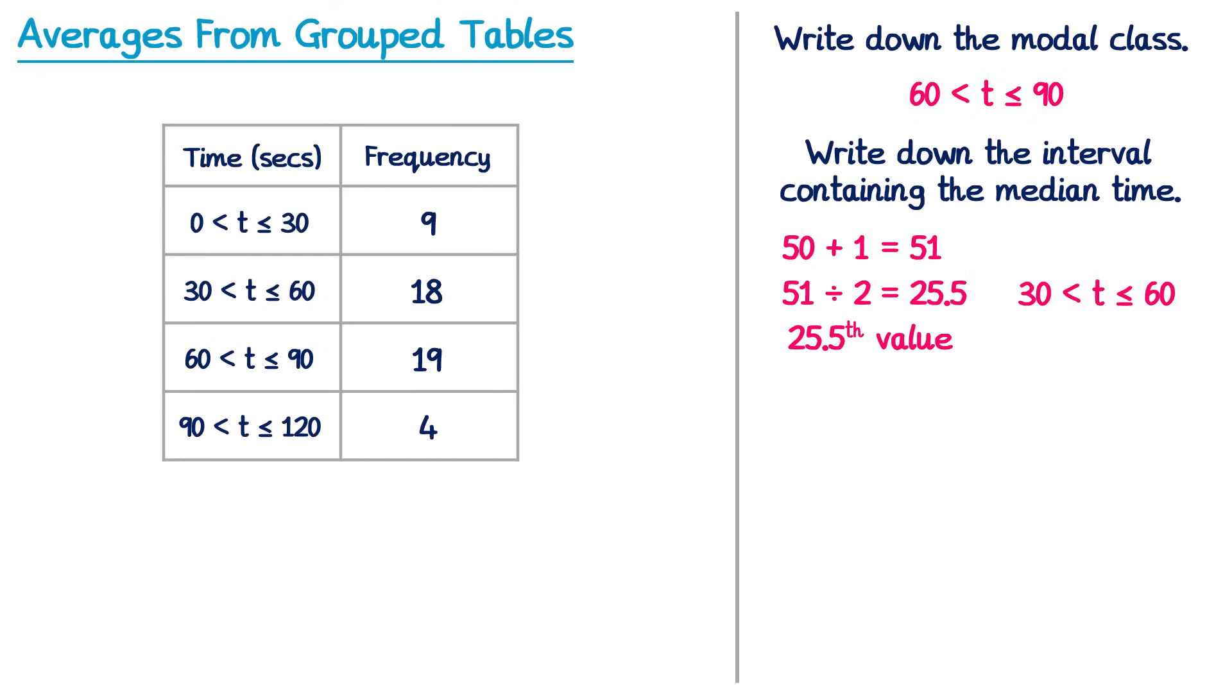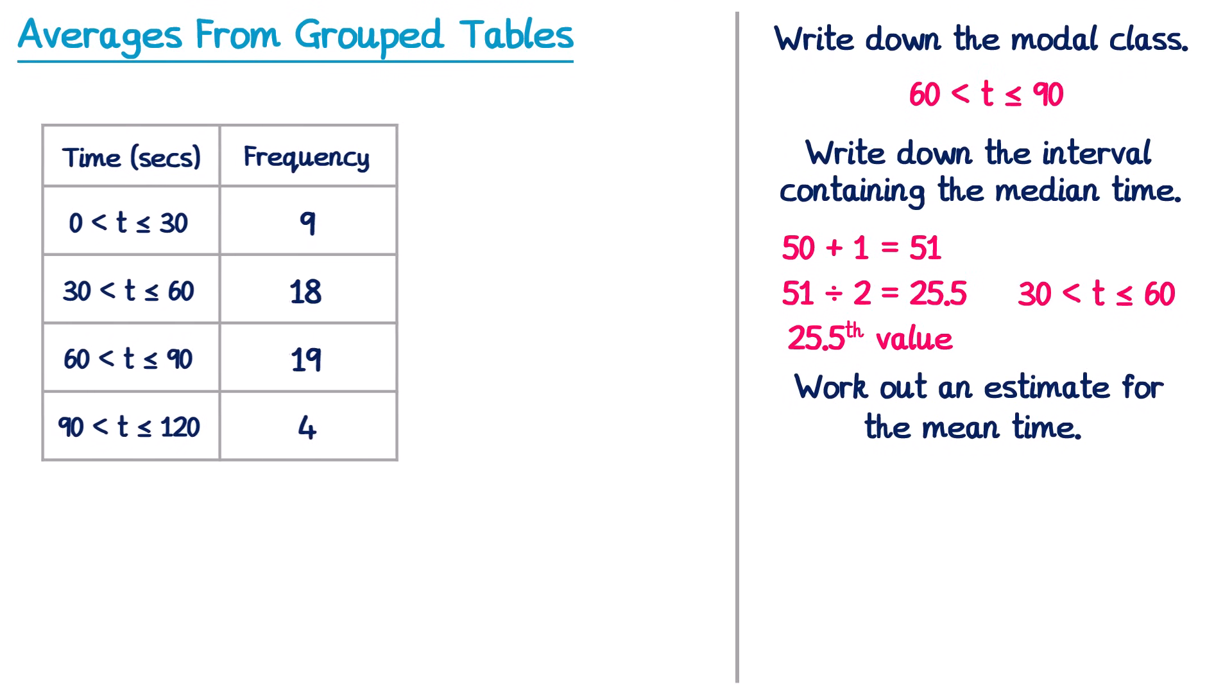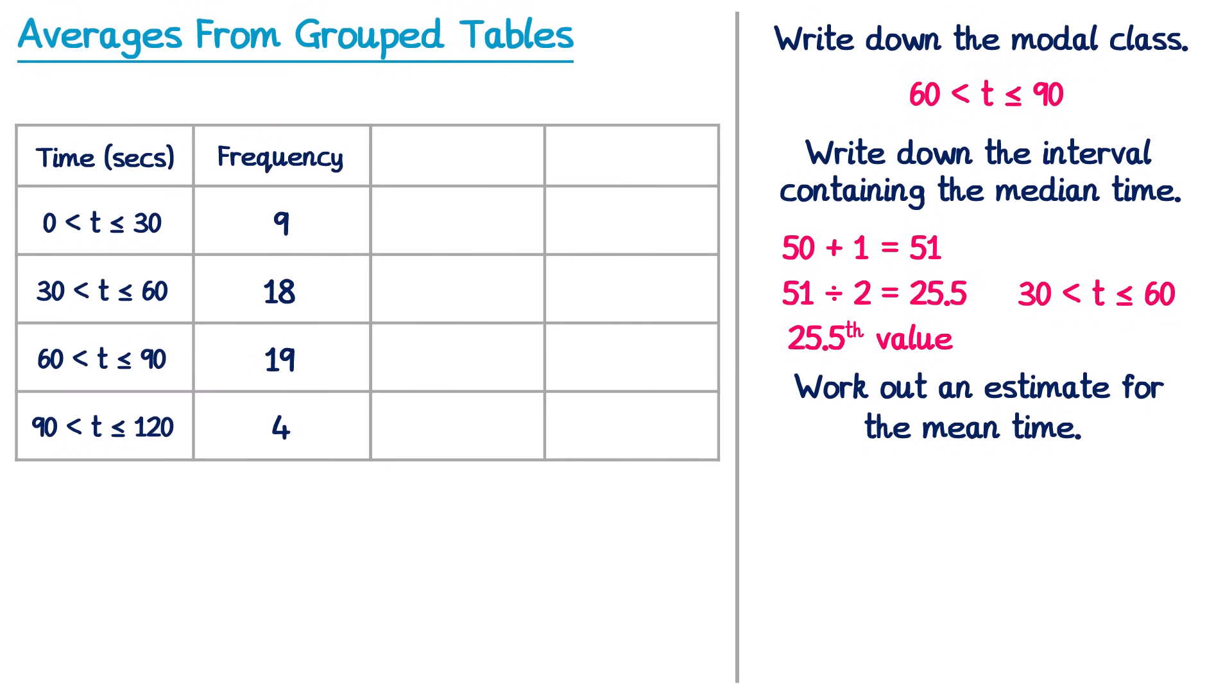And finally let's have a look at the mean, so we're going to work out an estimate for the mean time, remembering it's an estimate because we're using the midpoints rather than the actual times. So let's extend our table and add two more columns, and the first one's going to be for the midpoints. So we need the midpoint of the first interval. The midway point of 0 and 30 is 15.